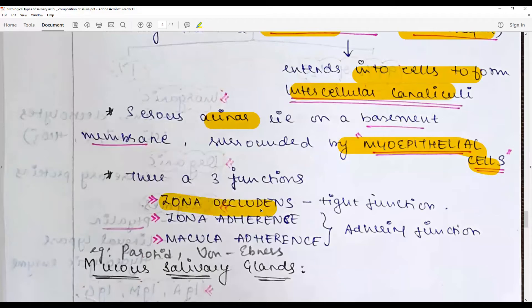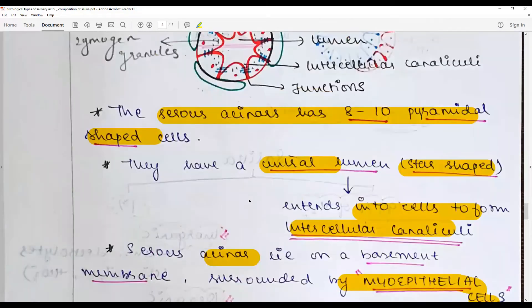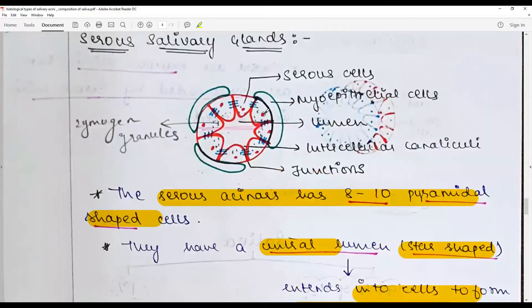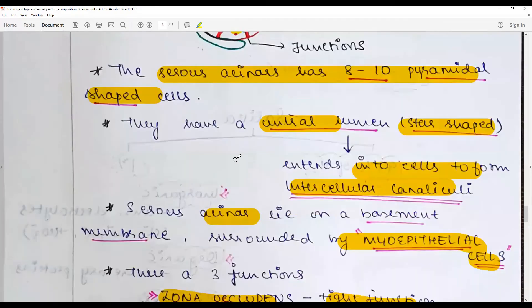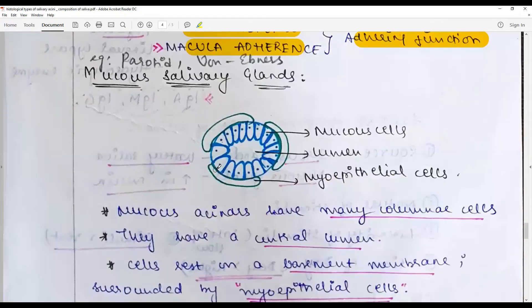They have three types of junctions: zona occludens, zona adherens, and macula adherens. Zona occludens is a tight junction. The nucleus is placed somewhere above the basement membrane and we have a lot of zymogen granules in the apex, which has a blue hue.